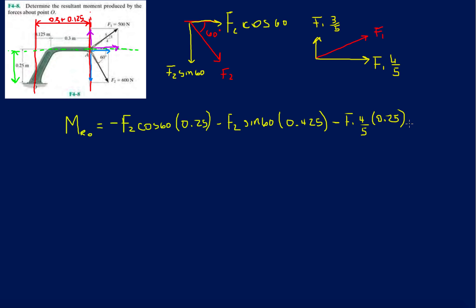Alright, and then last but not least, we have the y component of F1. And that's the only one that's going to be counterclockwise. So if you were to push up on A, you want to make this little arm rotate in the counterclockwise direction. So plus F1, 3 over 5, times the red distance of 0.425.